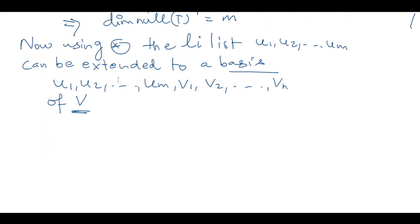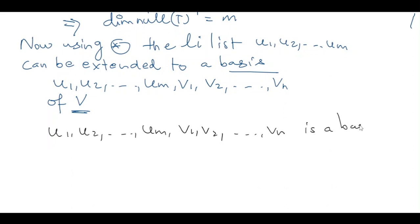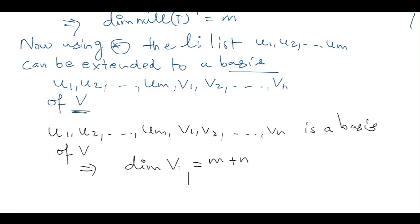If this list is a basis, then by definition of basis, the dimension of the vector space V is the number of vectors in the basis, which is m plus n. This is because I had m vectors previously and I added n more vectors, so in total I have m+n vectors. So the dimension of the vector space V is m+n.